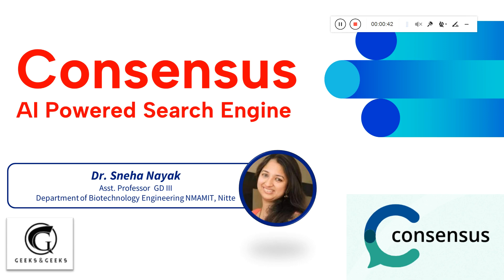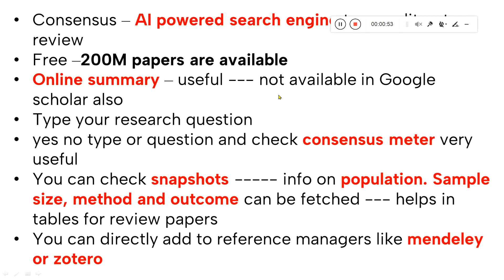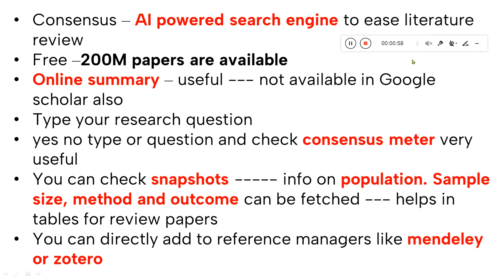There are a lot of search engines like Google Scholar and PubMed, and Consensus is one more search engine which would be very useful. I will share some features that will be useful for literature review. It is AI-powered and will definitely help you. They have more than 200 million papers in this search engine, which is an added advantage.